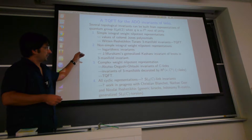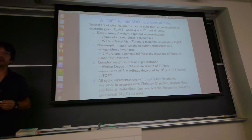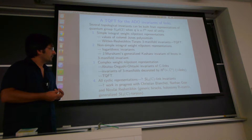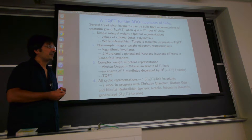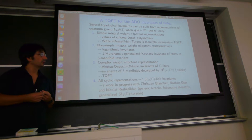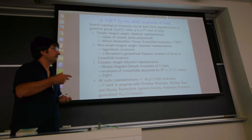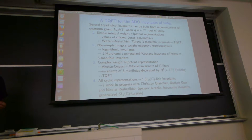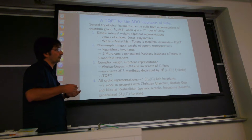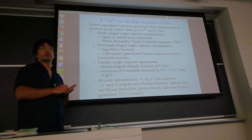There are uncountably many different representations with complex weights — one simple representation for each complex number. They were used already around 1995 by Akutsu, Deguchi, and Ohtsuki to construct invariants of C-colored links. A C-colored link is a link with a flat line bundle, or equivalently, you color the components of the link by non-zero complex numbers.